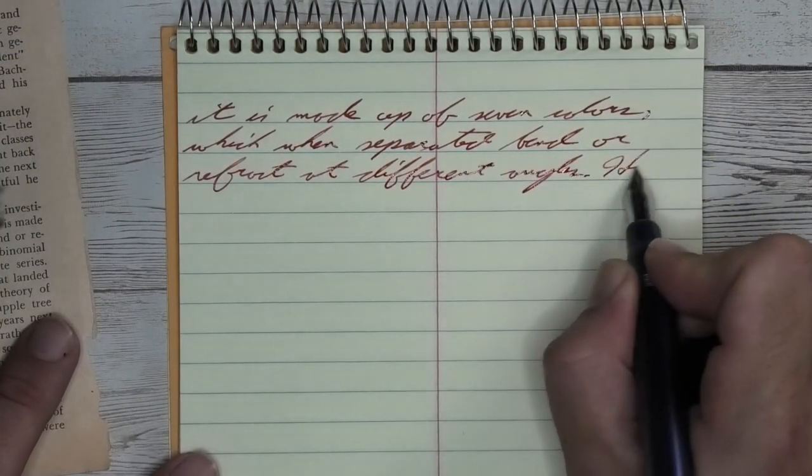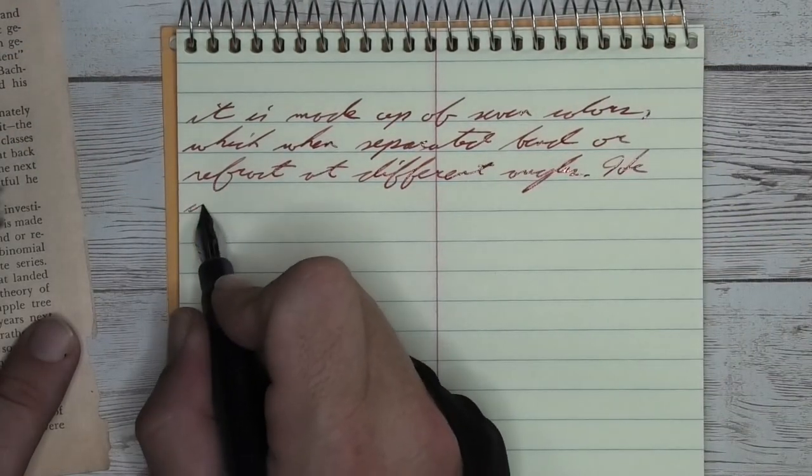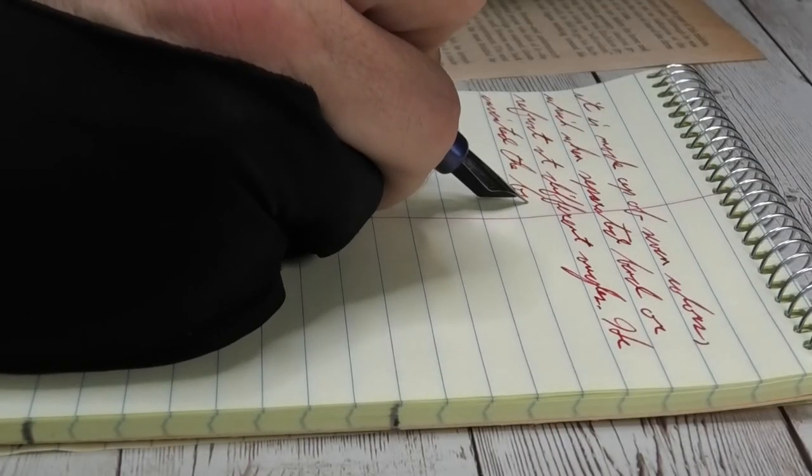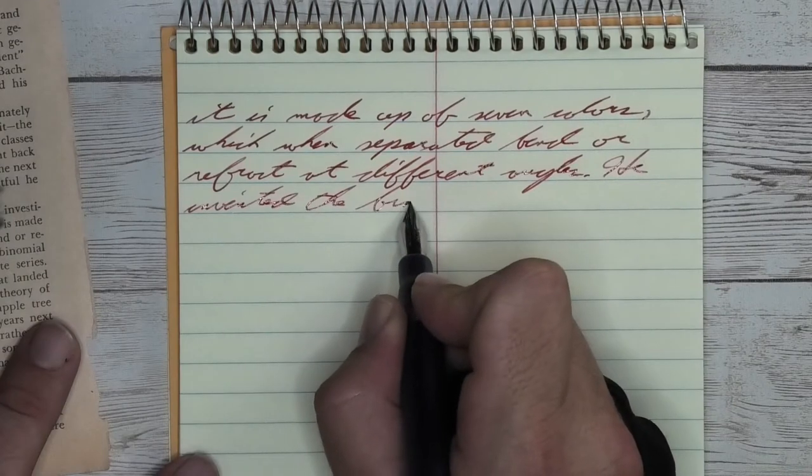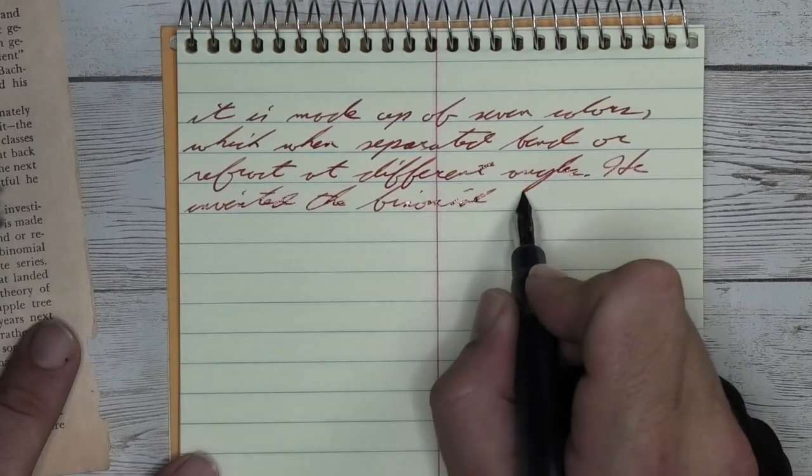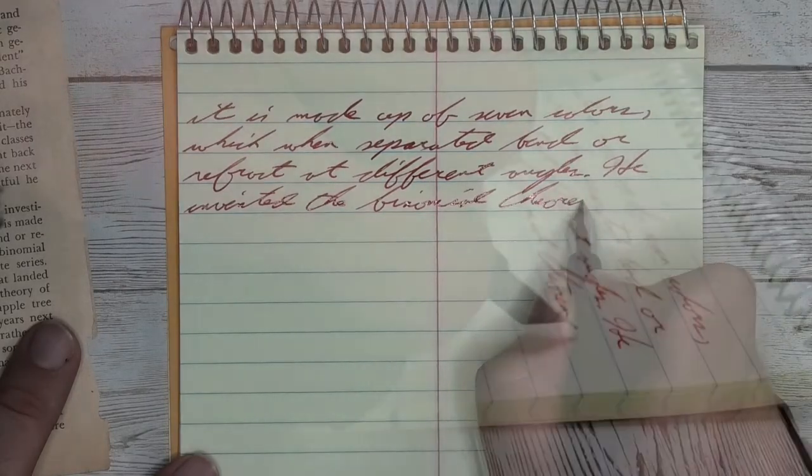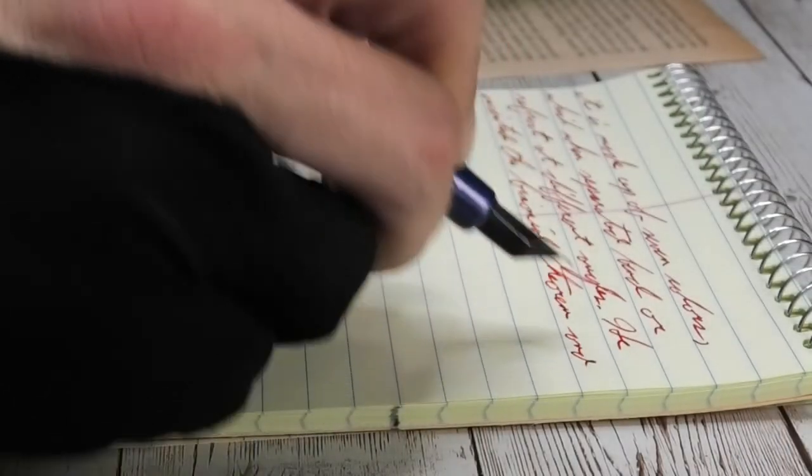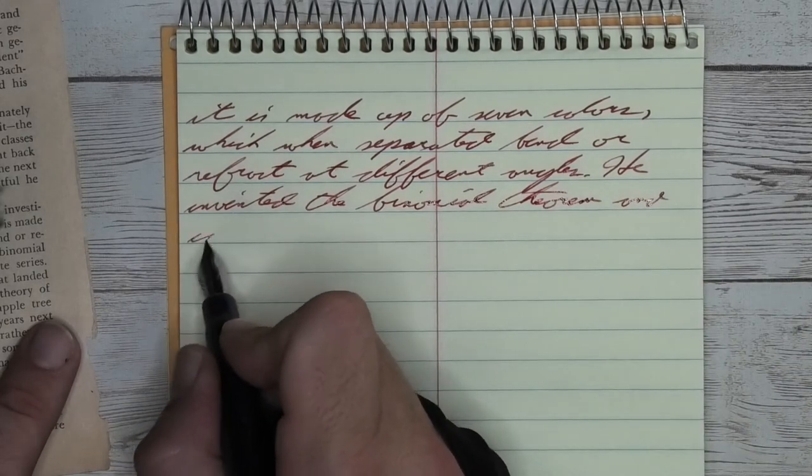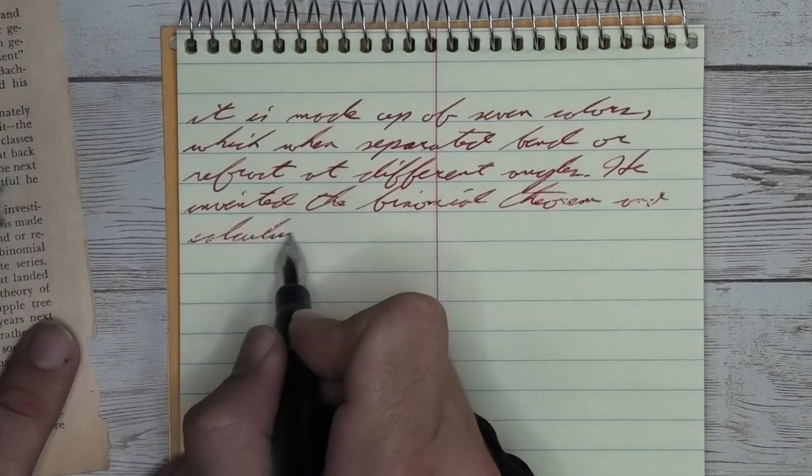Looking at the standard Noodler's nib, this paper with this ink looks like a real winner to me. I really like the tone that we're getting there. We get no feather, no spread. We are getting some shading, but for the most part, we're really getting a lot of that darker tone. I'm appreciating this a whole lot. It only has the showings of the lighter tone, which lets you see that shading.